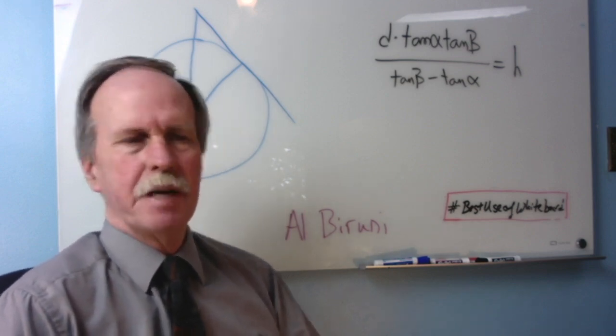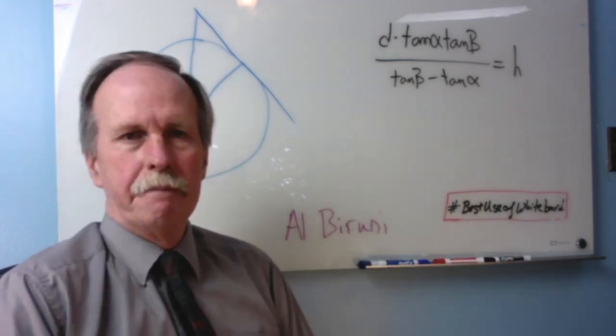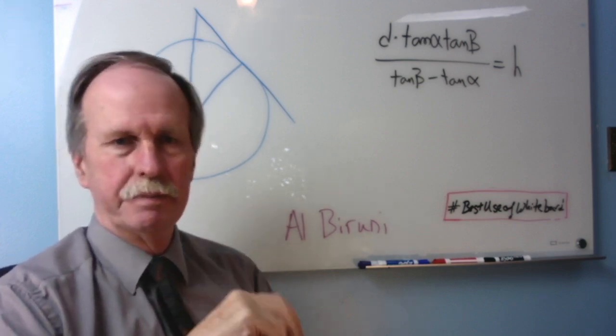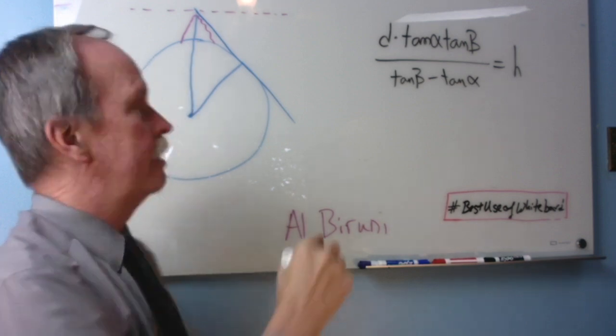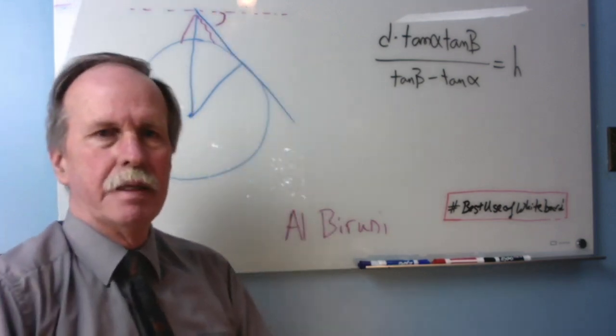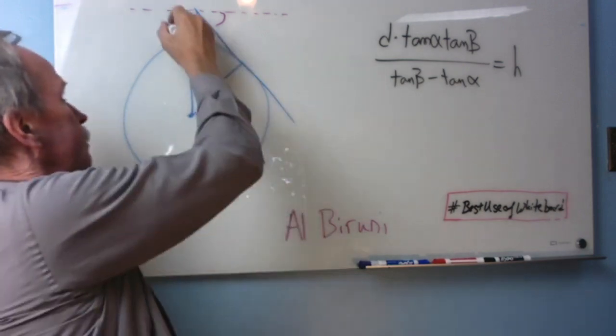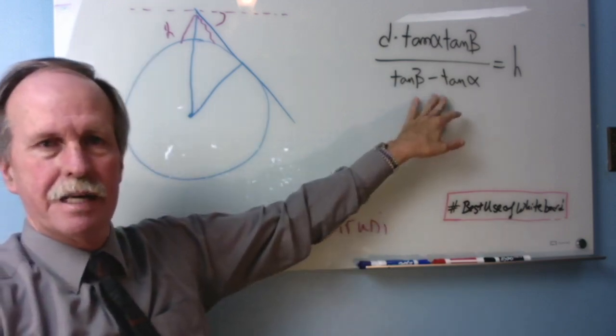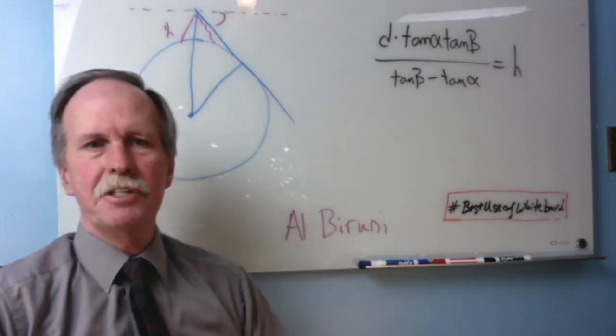In our first episode on this, we figured out how high the mountain was. Now let's go ahead and complete his method for measuring the radius of the Earth. As you may recall, Al-Biruni measured the angle of drop to the horizon from the top of a mountain. He didn't know the distance to the horizon. He did know the height of the mountain, because we derived that using the tangent function in our last episode. Now we're going to figure out how to calculate the radius.